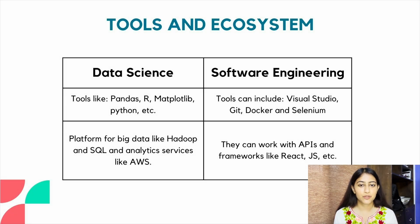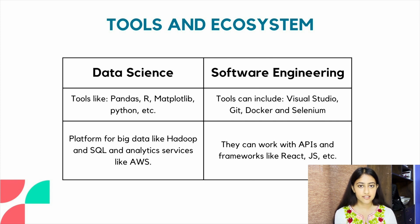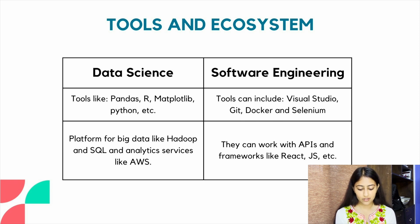Let's discuss the tools and ecosystem for each field. For data science, tools like pandas, matplotlib and Python are used, along with big data platforms like Hadoop, SQL and analytic services like AWS. For software engineering, tools include Visual Studio, Git, Docker and Selenium, and you work with APIs and frameworks like ReactJS and NodeJS.